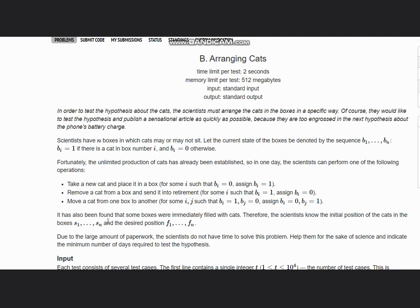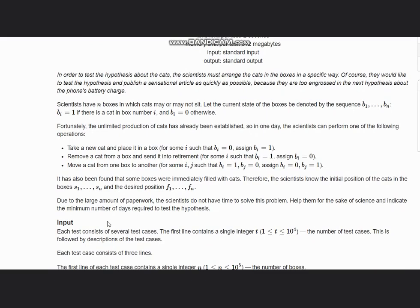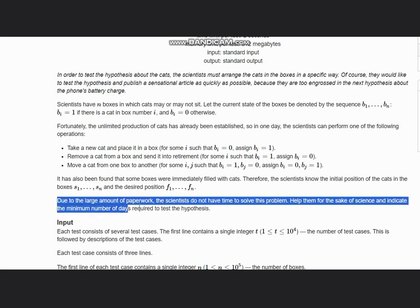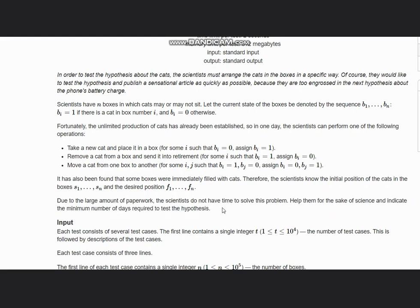It has also been found that some boxes were immediately filled with cats. Therefore, the scientists know the initial position of cats in the boxes s1 to sn and desired position f1 to fn. Due to large amount of paperwork, the scientists do not have time to solve this problem. Help them for the sake of science and indicate the minimum number of days required to test the hypothesis.